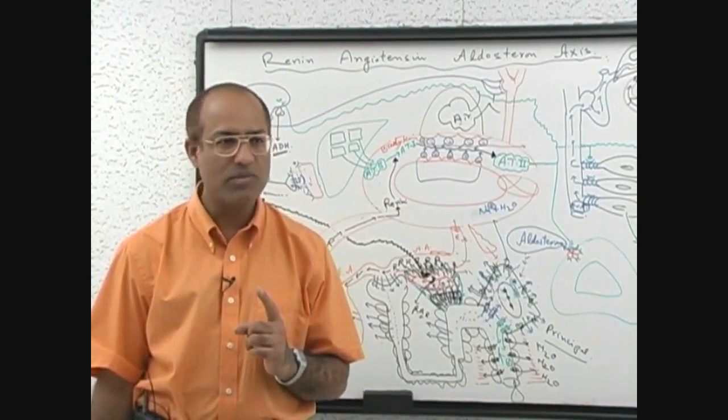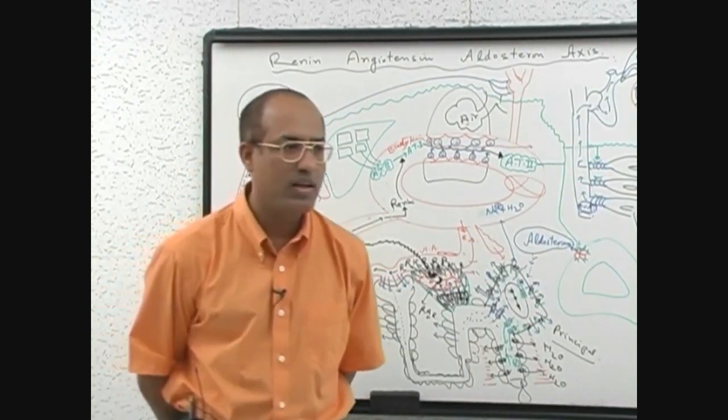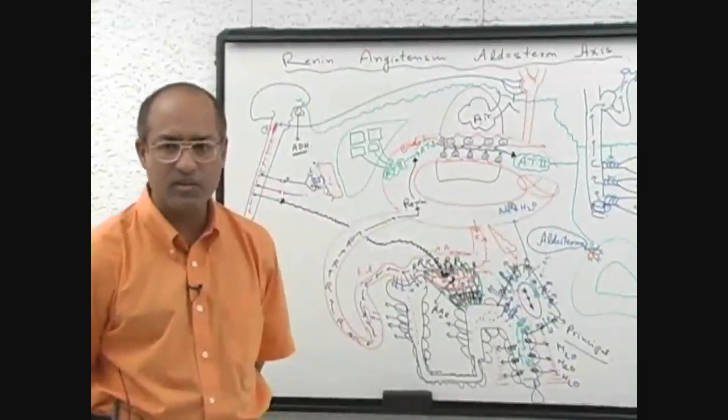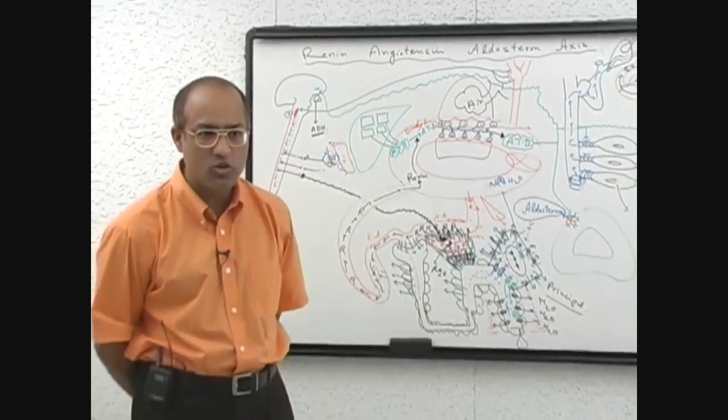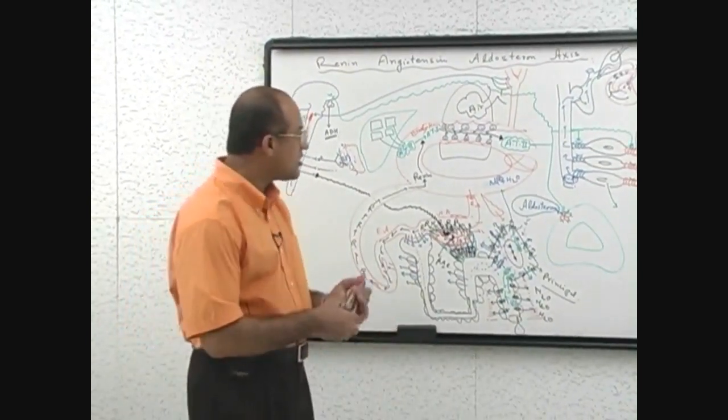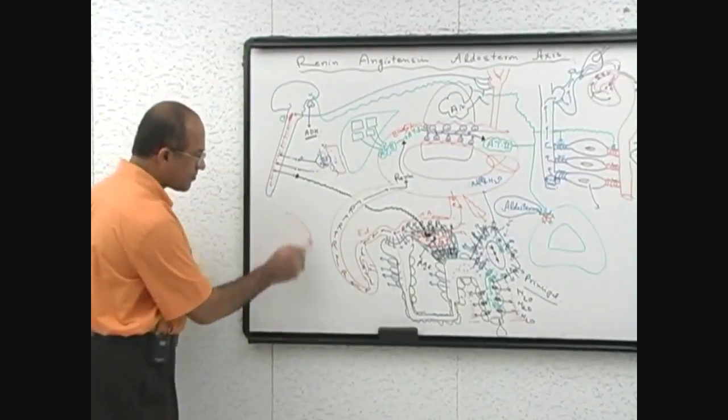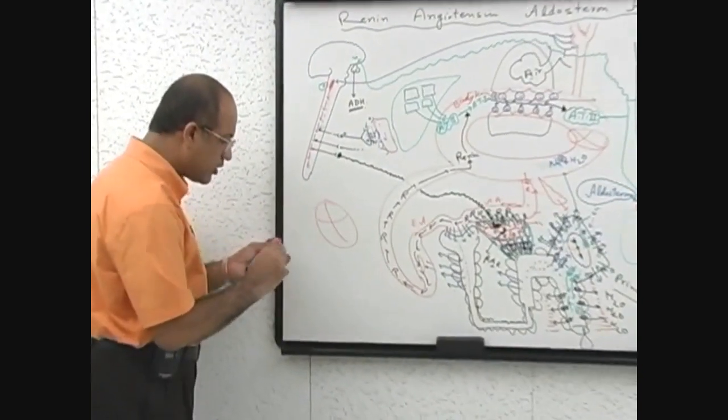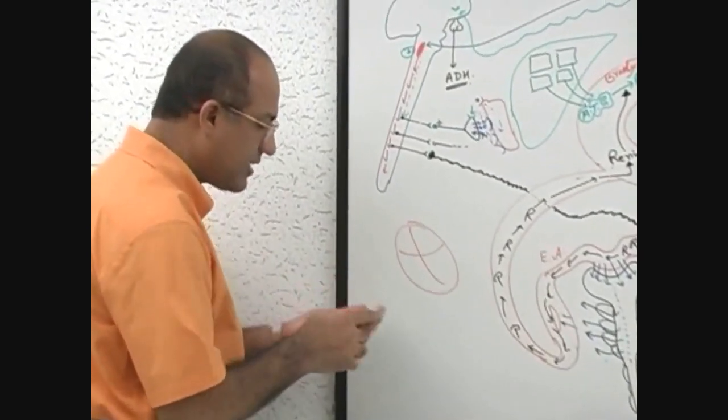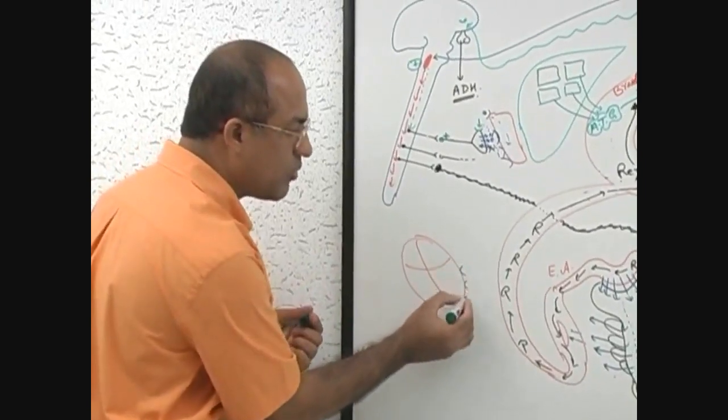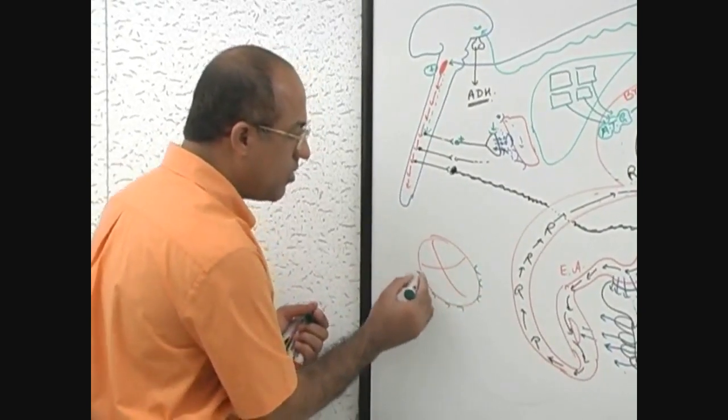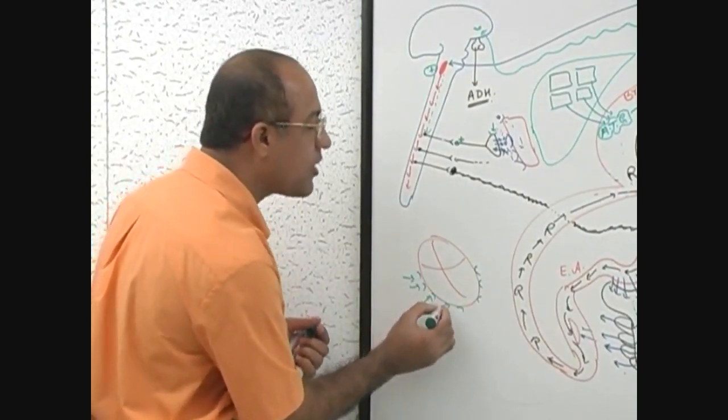When angiotensin-2 level is chronically increased, then something really very bad happens. If angiotensin-2 is chronically increased and aldosterone is chronically increased, this chronically increased angiotensin-2 and aldosterone will work on the myocardium and change the morphology of the heart.